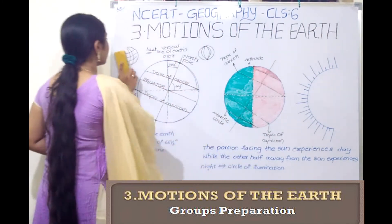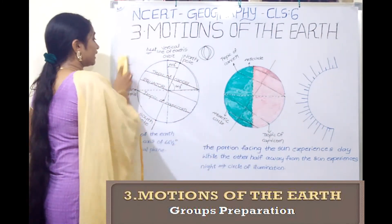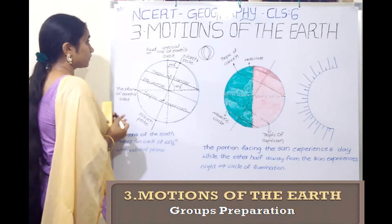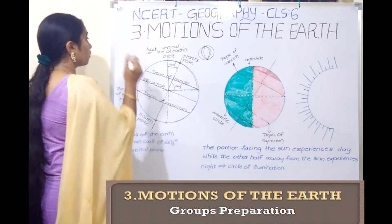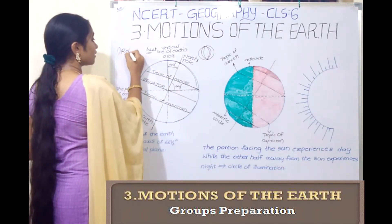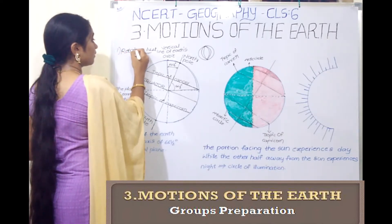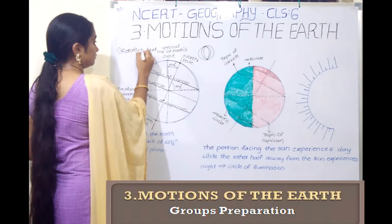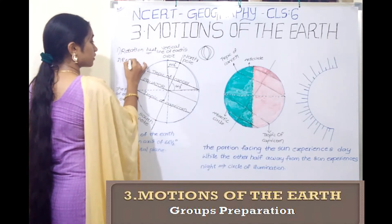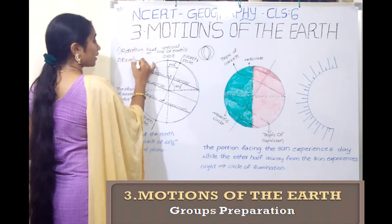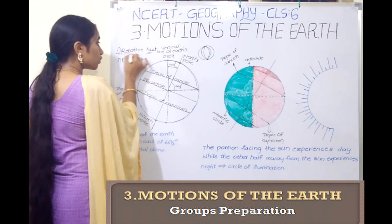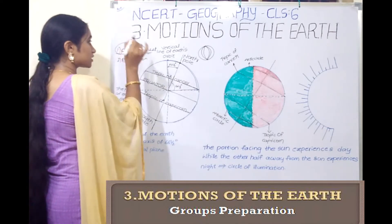The motions of the Earth are of two types. One is rotation, and the second one is revolution. So first, we will look at rotation.